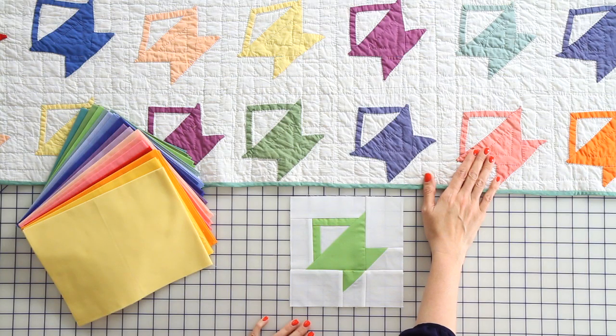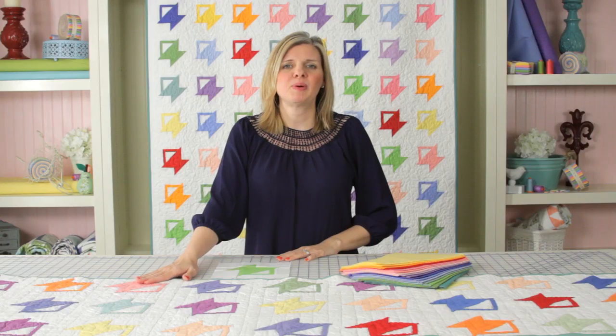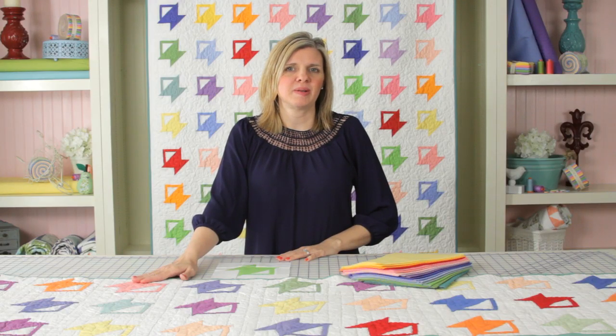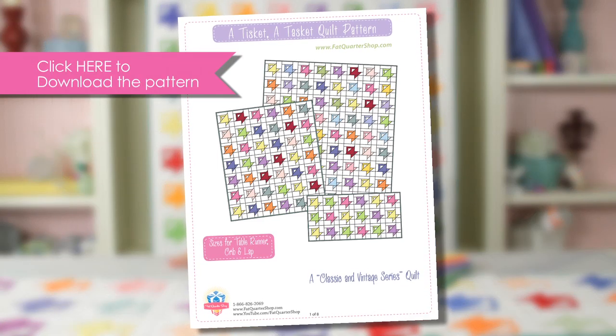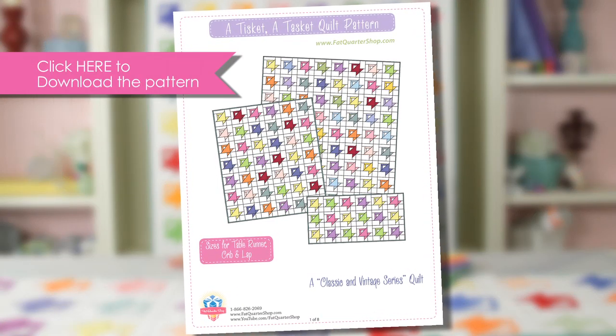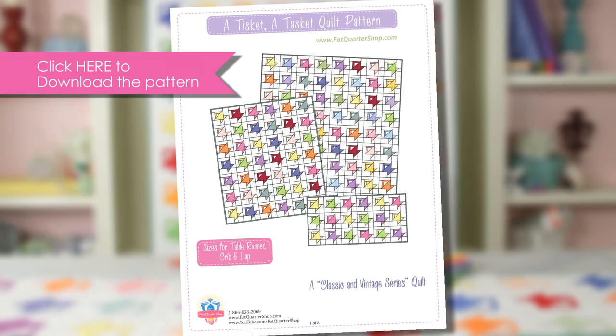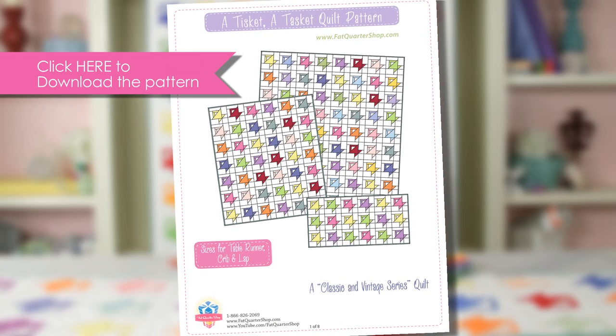Today, we're featuring 1930s Bella Solids by Moda Fabrics, but since this block is so simple, lots of different fabrics would work with it. Download the free pattern at Fat Quarter Shop, and best of all, this pattern comes in three sizes: table runner, crib, and lap.